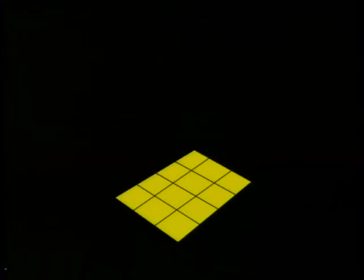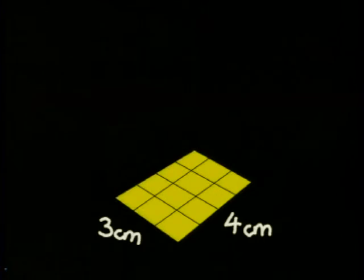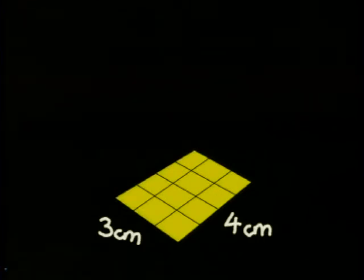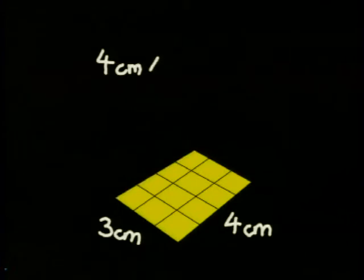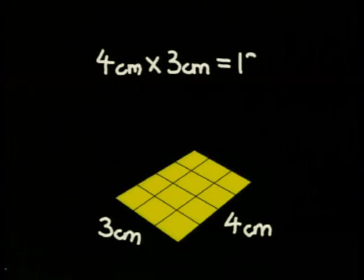Let's start by looking at just the base of this structure. What is the area of this base? It's a rectangle, so its area is length times breadth, which is 4 centimeters times 3 centimeters, which is 12 centimeters squared.